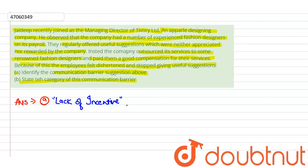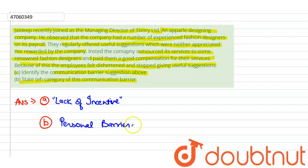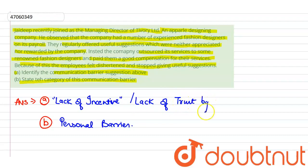They are not interested to share that information because the company does not appreciate them — there is no incentive, help, or promotion. The second part of the question asks what category this barrier belongs to. This is a kind of personal barrier, because it affects a person's growth and productivity. The employee is being affected personally — there is a lack of incentive and lack of trust by the supervisor, which makes them unwilling to give suggestions.